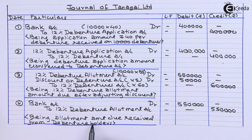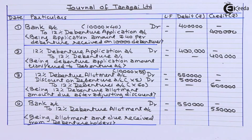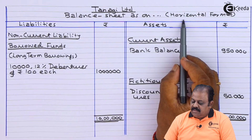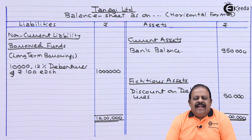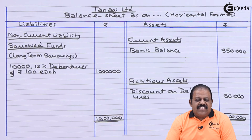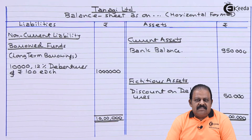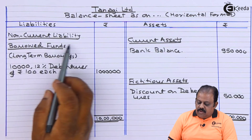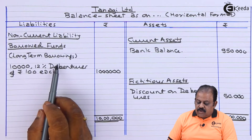Let us see how these items appear in the balance sheet. The company's balance sheet is given here in horizontal format. As per the new Companies Act, the format of the balance sheet has been changed — it should be in vertical format as it is in both syllabi. In horizontal format, under liabilities: non-current liabilities, long-term borrowings — 10,000 12% debentures of rupees 100 each, amount is 10 lakhs.